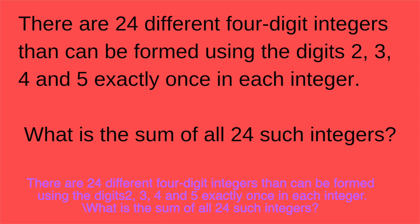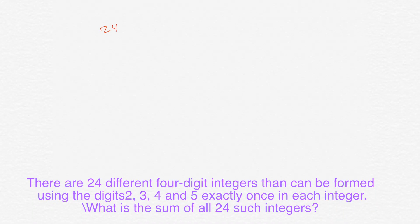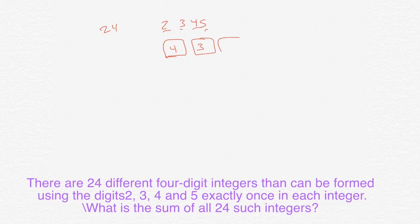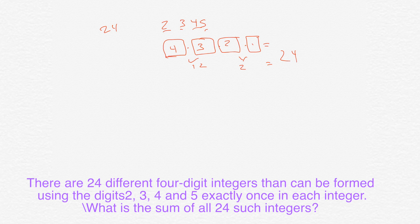So here it says there are 24 different permutations of the digits 2, 3, 4, 5, which makes sense because with those four digits, you could have four different possibilities in the first number, three different possibilities in the second number, two possibilities in the third number, and then one possibility. And if you multiply four times three times two times one, four times three is 12, and two times one is two, so 12 times two is 24. So there are 24 different permutations of these numbers: 2, 3, 4, and 5.